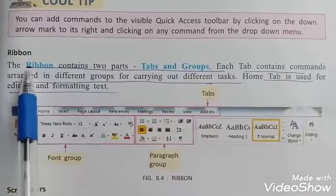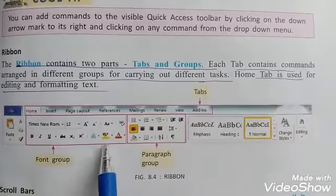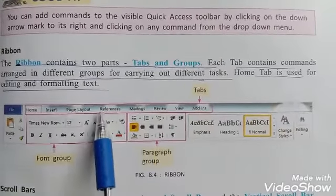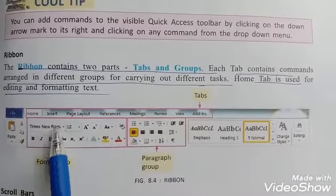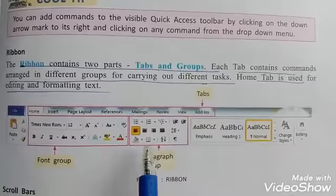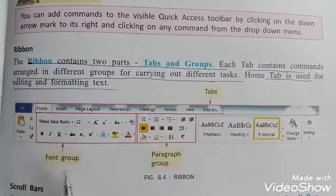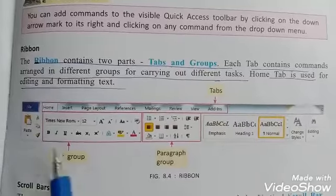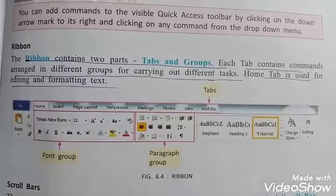Next one is Ribbon. Ribbon contains two parts: Tabs and Groups. When we click Tabs, it contains different groups, and groups contain different commands. Like Home Tab is used for editing and formatting text.